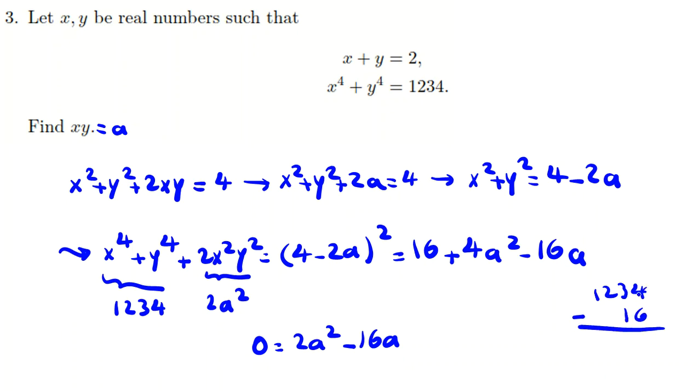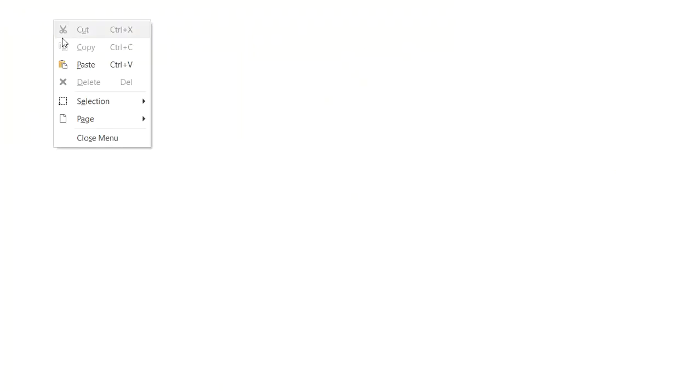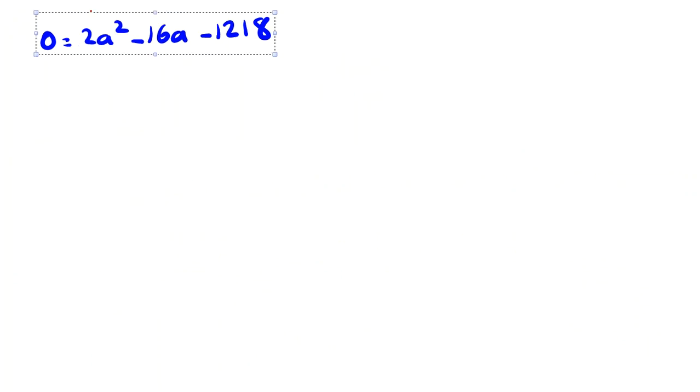So 1234 minus 16 is 1218. It will be negative because it is 16 minus this, so it will be negative 1218. Now let's copy this equation and solve it in the next page to find a.